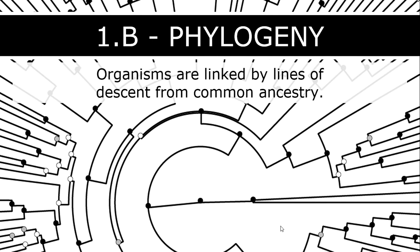Now that we have spent so much time talking about evolution — why it occurs, how it occurs, and what it leads to — I want to spend some time talking about how we can visually represent that evolution. I need to introduce you to something called a phylogeny. You've been seeing these before, so it's not brand new, but you need to start being able to analyze and at times create them given some information.